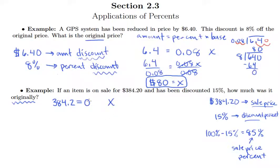So we can put 85% in here as 0.85. And we'll take 384.2 and divide by 0.85 on both sides.